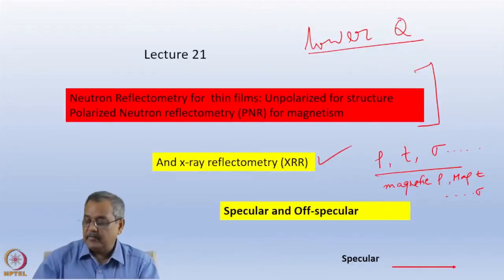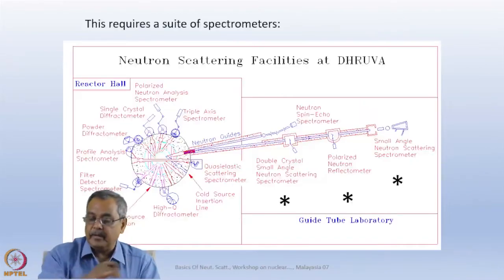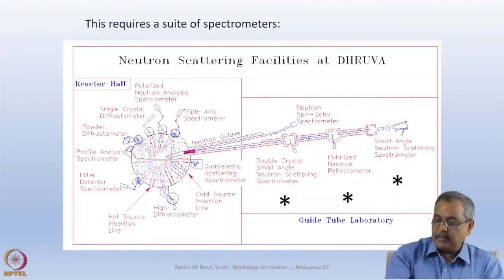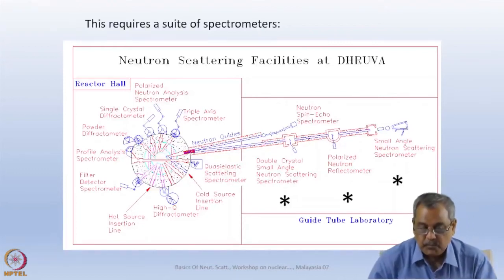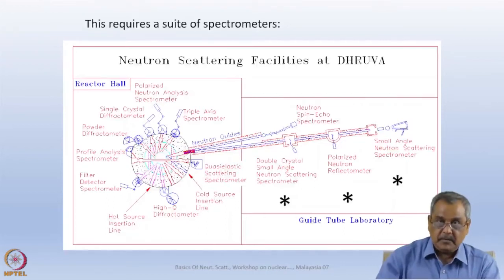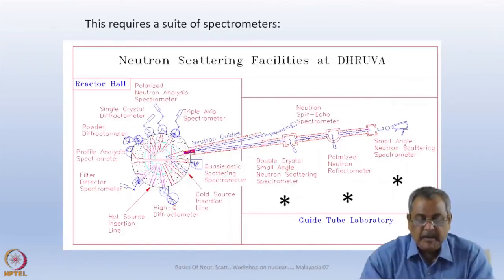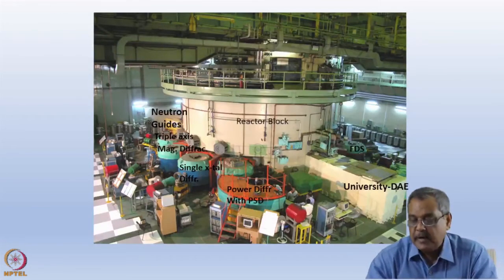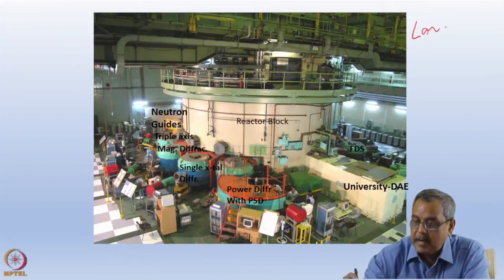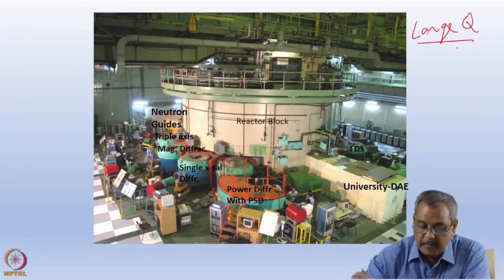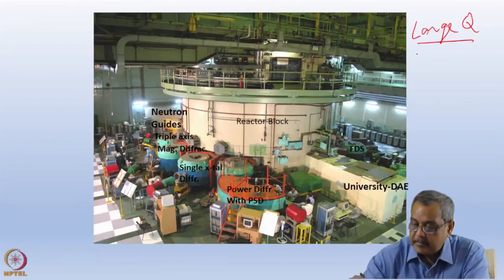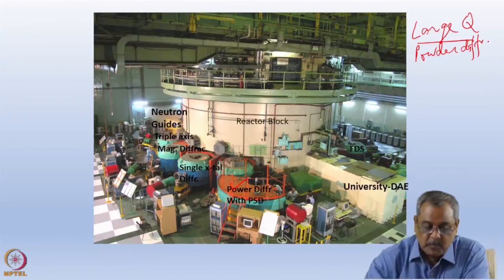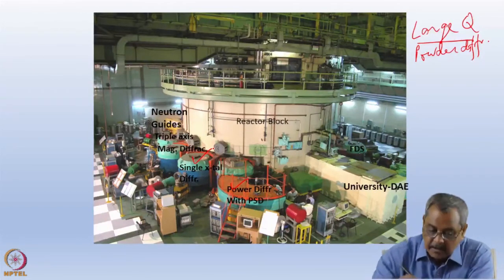I will be discussing initially specular reflectometry. But before I get into the proper discussion, I want to point out the small difference between experiments in the reactor hall and experiments in the guide halls. So far we have been discussing large Q experiments — large momentum transfer. We have powder diffraction, single crystal diffraction, magnetic diffraction, and also liquid and amorphous spectrometers on the other side of the reactor block in Dhruva.